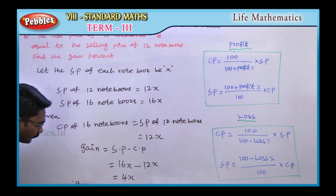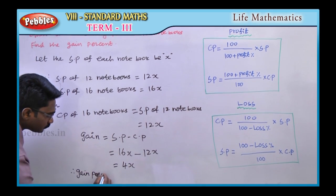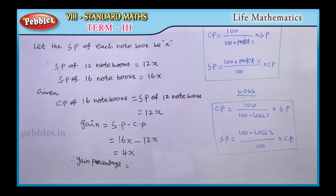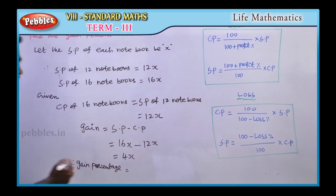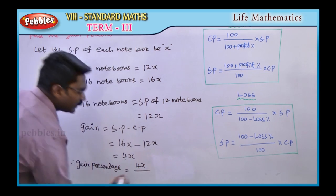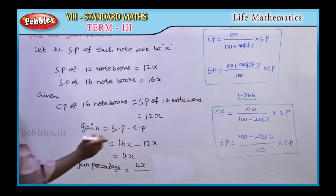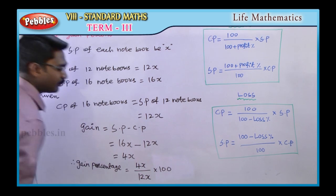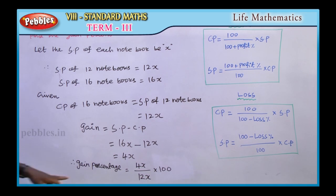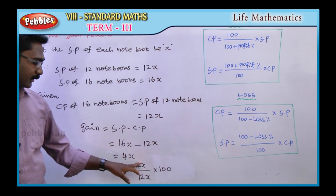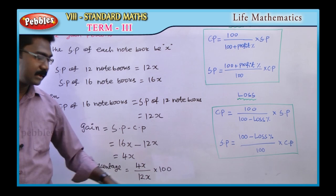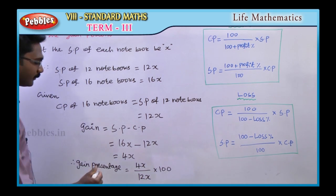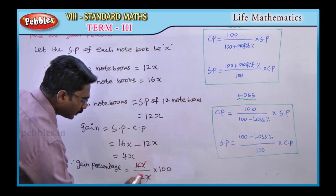Now find the gain percentage. Gain percentage equals gain divided by cost price, multiplied by 100. That gives us 4X divided by 12X, multiplied by 100. The X and X cancel out.